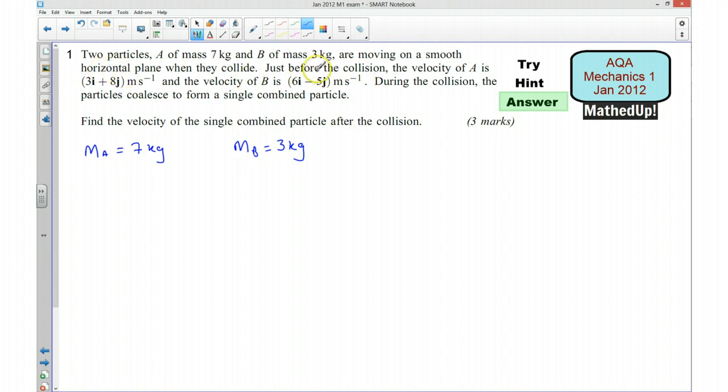I know the initial velocity of A and that's going to be 3i plus 8j. I'm going to write this as a column vector.